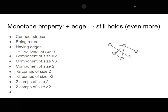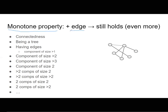There is something important for us: the monotonicity of properties. A property is called monotone if whenever you add an edge to a graph that already has the property, the property continues to hold — even more so. If a graph has a certain property and you add an edge, it still has this property.